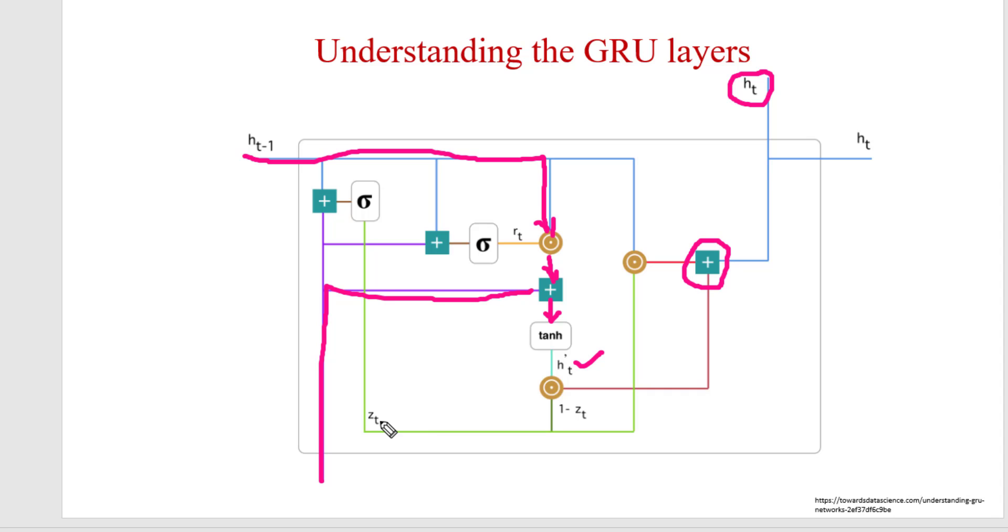If z t value is 1, then 1 minus z t will be 0, and it is saying that previous information is important, not this one. So none of the information will be passed to this. After performing addition of these two dot products we are going to generate this h t. h t will be current output of GRU and it will be forwarded to the underlying neural network.